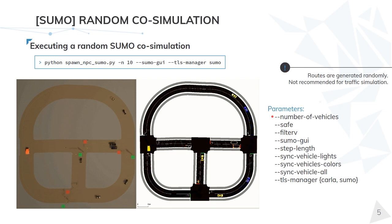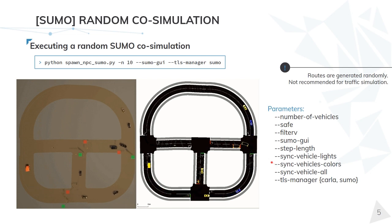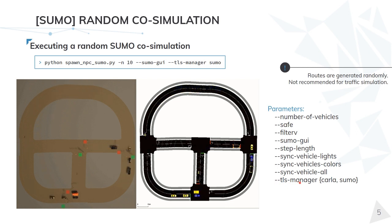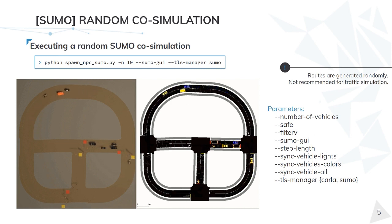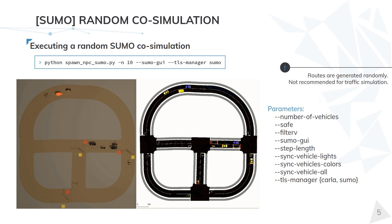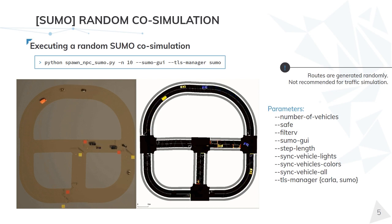For instance, you can choose the number of vehicles that you want to spawn, set a pattern to filter the vehicle types, enable or disable the synchronisation of vehicle lights and vehicle colours, or choose which simulator — CARLA or SUMO — is in charge of the management of the traffic lights. We call this type of co-simulation "random" because the SUMO vehicle types are spawned randomly and the routes of each vehicle are also updated randomly, which can generate highly unrealistic routes and behaviours. Depending on the type of study the user is performing, this may not be the proper way to run a co-simulation.